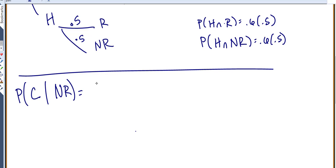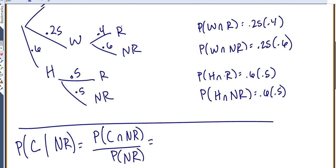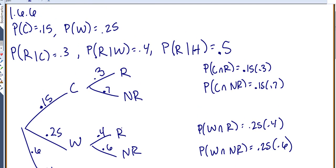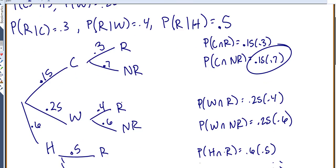Now conditional probability formulas: if you want a conditional probability, you do the probability of the intersection divided by the probability of the part that you know. So we know that it's not raining. So now we need probability of cold and not rain over probability of not rain. So to find these, we come back up and look up above. So cold and not rain is this 0.15 times 0.7.